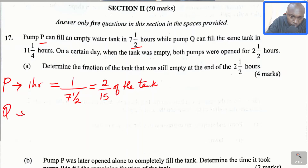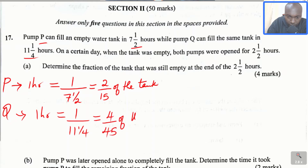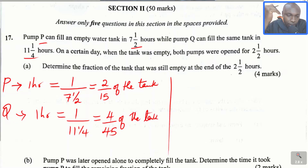What about Q? Q can fill this tank in 11 and 1 over 4 hours. So in 1 hour, this will be 4 divided by 45 of the tank. So those are the fractions of the tank filled by P and Q in 1 hour.